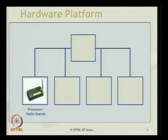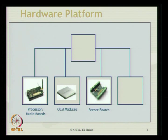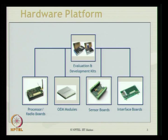Looking at the processor and radio boards, they have a frequency capability and can collect signals using the antenna attached to the board, which we call as the radio board. It also comes with OEM modules and sensor boards which have different configurations, where different layouts of sensors and adaptation cords can be plugged in. It comes with a lot of interface boards to keep building them in series of connections, and it includes evaluation and development kits, which is the hardware platform of the sensor networking.